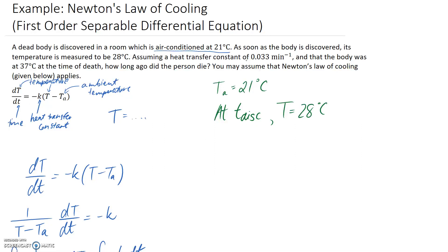We're going to assume a heat transfer constant of 0.033, and the units for that are minutes inverse. And at the time of death, the body was at 37 degrees Celsius. So at T death, capital T is 37.